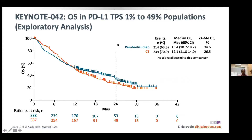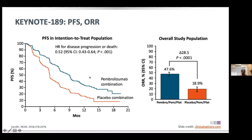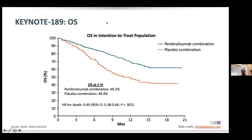For patients with PDL1 of 1 to 49%, there is a difference but it is not very marked. KEYNOTE-189 looked at pembrolizumab for non-squamous histology with a similar design. The overall response rate was 47% for the pembrolizumab plus chemotherapy arm, with a very significant p-value separating the two PFS curves. For overall survival, the pembrolizumab combination arm achieved 69.2% at one year versus approximately 50% for the placebo/chemotherapy arm.